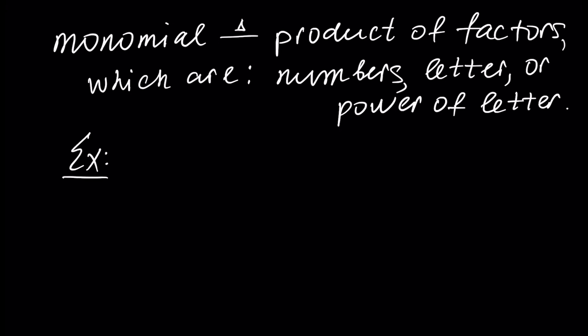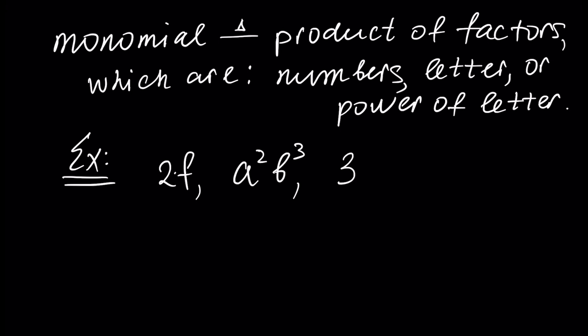Examples of monomials are, for example, 2F. This is a product of number 2 and letter F. It can also be a squared and b cubed. Here we have a coefficient 1 which we do not write. So this is a power of two letters: a to the power of 2 and b to the power of 3. Another example is 3abc.